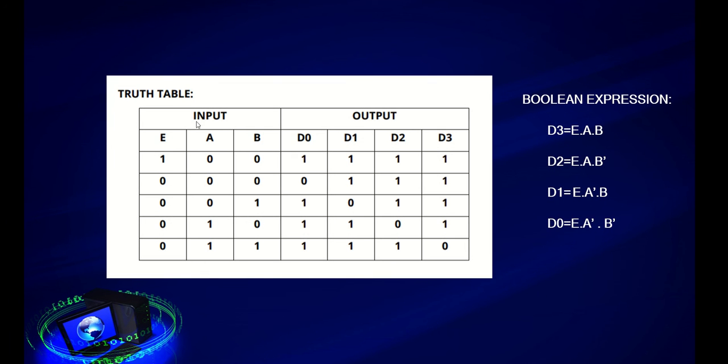The truth table has been given here. Inputs, this is enable pin, this is a and b. This output is given here, d0, d1, d2 and d3. The boolean expression is given here.